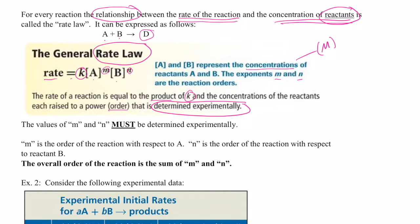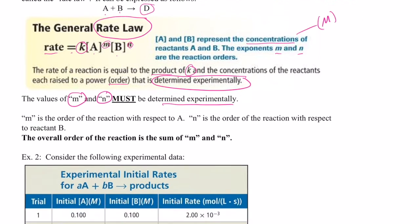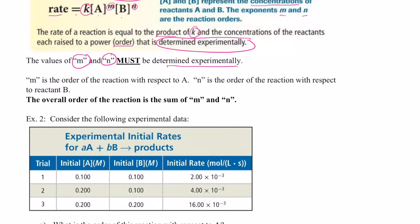The exponents M and N are what's called the reaction orders, or the order of the reaction with respect to A and B. The rate of a reaction equals the product of K and the concentrations of reactants each raised to a power determined experimentally. These exponents M and N must be determined experimentally — we need data to determine those exponent values. M is the order with respect to A, N is the order with respect to B, and the overall order is the sum of M and N.